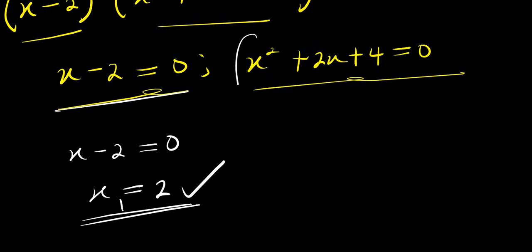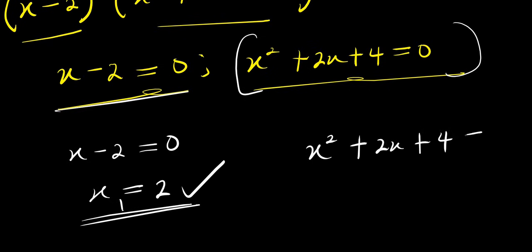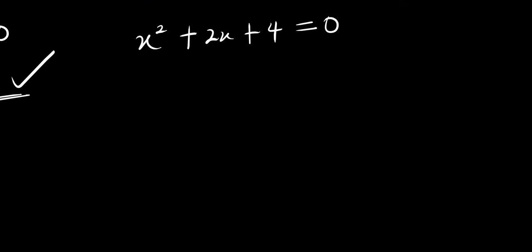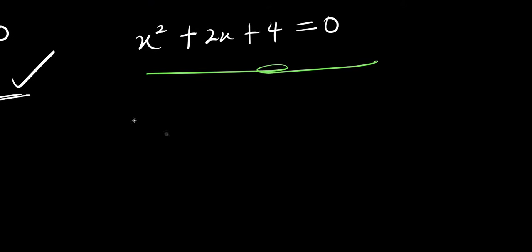Now to solve this other one here, x squared plus 2x plus 4 equals 0. We solve this quadratic equation. Let's start using the formula method.